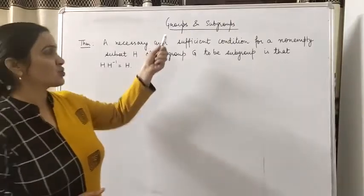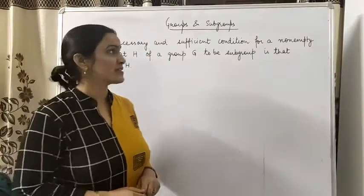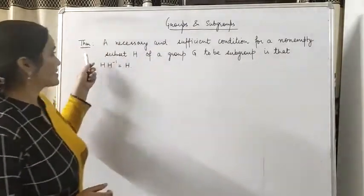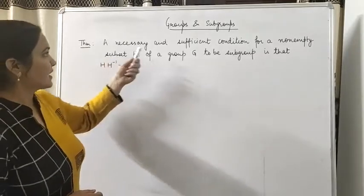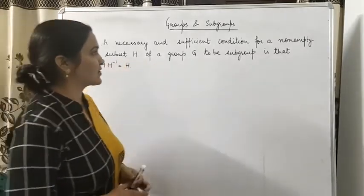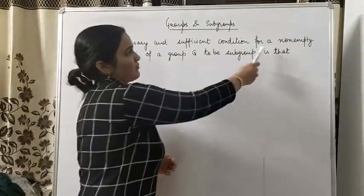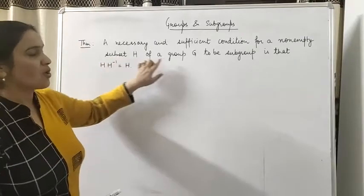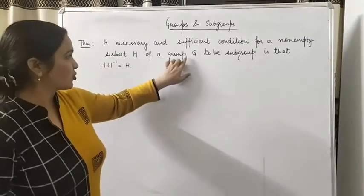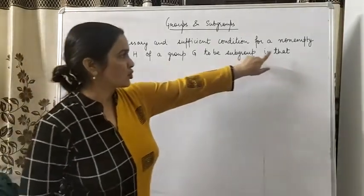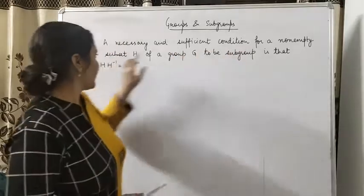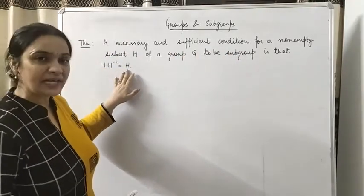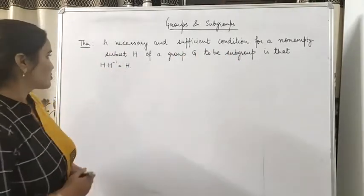Continuing with the same topic, groups and subgroups. Next theorem: a necessary and sufficient condition for a non-empty subset H of a group G to be a subgroup is that H·H⁻¹ = H.